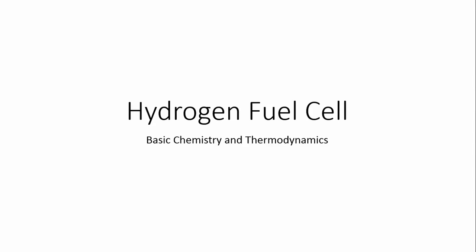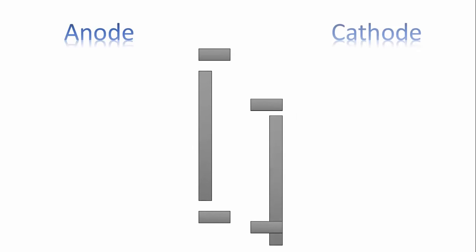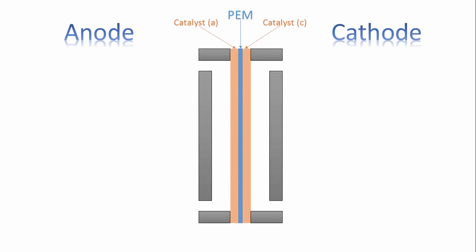Let's have a look into the hydrogen fuel cell reactions and get into its thermodynamics. Here is the anode side and this is the cathode side of a hydrogen fuel cell. This is the proton exchange membrane PEM, which separates the anode and cathode sides, and here are the catalyst layers. Hydrogen is fed into the anode flow channel.